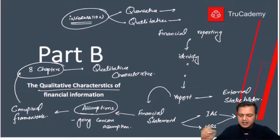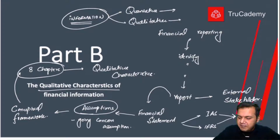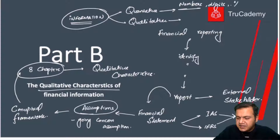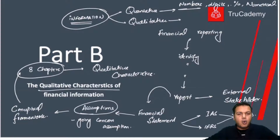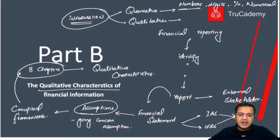There are two kinds of information. Quantitative information can include numbers, percentages, and other numerical data. Qualitative information, on the other hand, is not based on numbers, digits, or percentages — it is represented qualitatively rather than numerically.